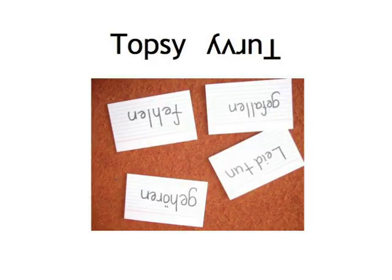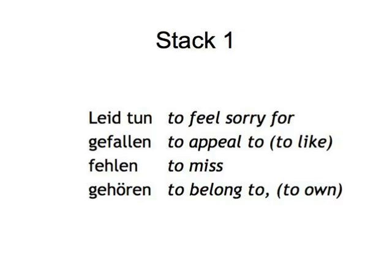Topsy-turvy. This game looks nearly the same as the one before, but we're using the German dative verbs that put things the other way around — like 'leid tun', to feel sorry for. It'll be a bit more challenging. Again, write the following verb list on cards with the translation on the back: Leid tun — to feel sorry for; Gefallen — to appeal to, or to like; Fehlen — to miss; Gehören — to belong to, to own.